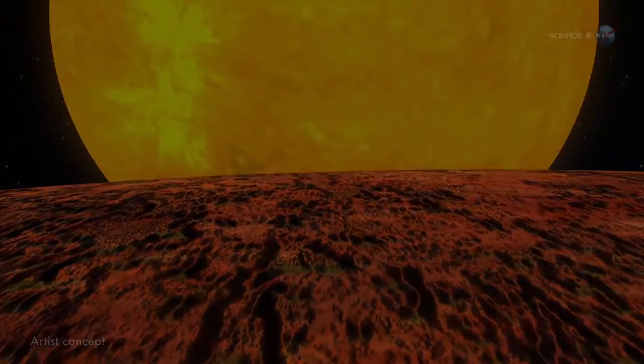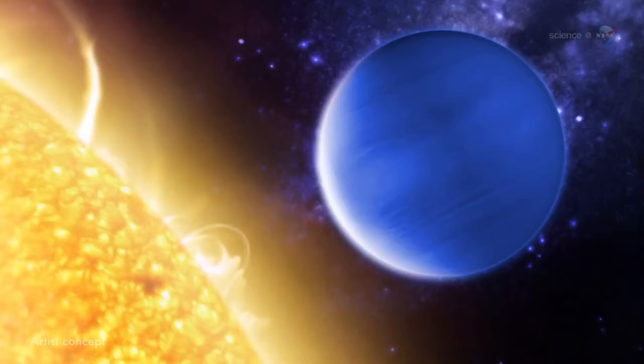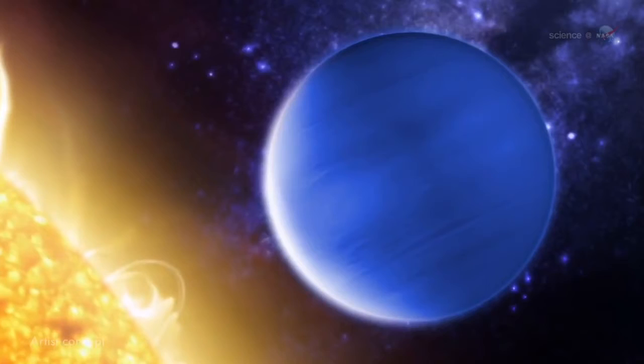The inner planet, Kepler-47b, closely circles the pair of stars, completing each orbit in less than 50 days. Astronomers think it is a sweltering world where the destruction of methane in its superheated atmosphere might lead to a thick global haze. Kepler-47b is about three times the size of Earth.